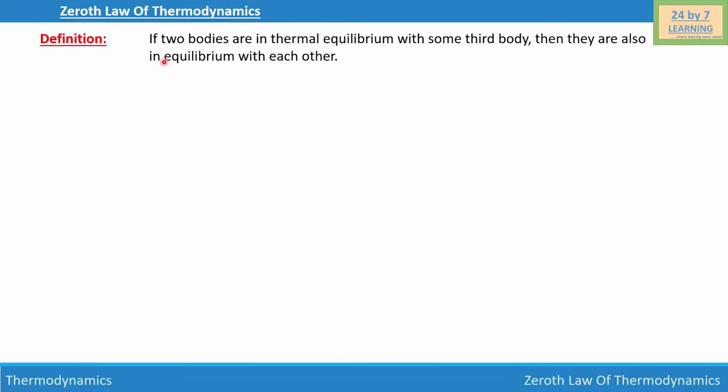The Zeroth Law of Thermodynamics: if two bodies are in thermal equilibrium with some third body, then they are also in thermal equilibrium with each other. In order to explain this, I'm going to consider three bodies.